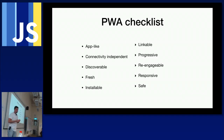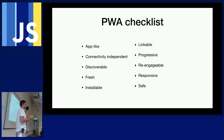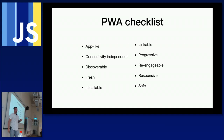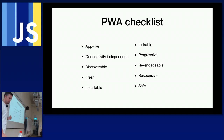Responsive: very straightforward — on a tablet it should have the right dimensions, on a mobile phone the right dimensions. Safe: progressive web apps and especially the service worker API dictates that you must use HTTPS at all times. Using HTTP will not work with the service worker.